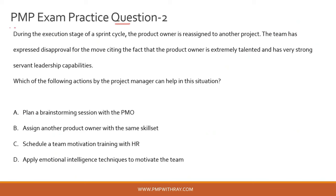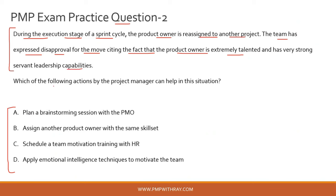Question number two: please pause the video, read the question and try to answer it before we take this together. During the execution stage of a sprint cycle, the product owner is reassigned to another project. The team has expressed disapproval, citing that the product owner is extremely talented and has very strong servant leadership skills. Which of the following actions by the project manager can help in this situation?